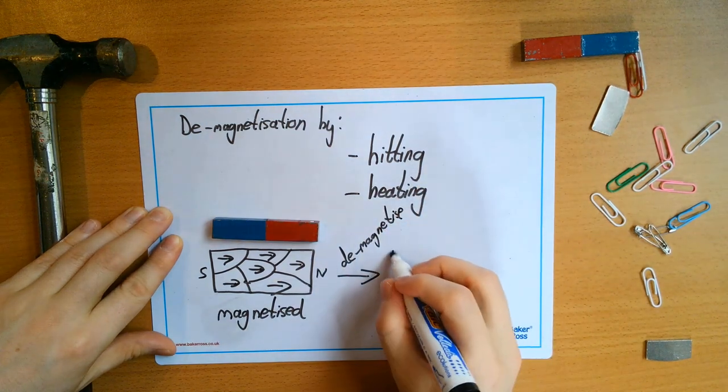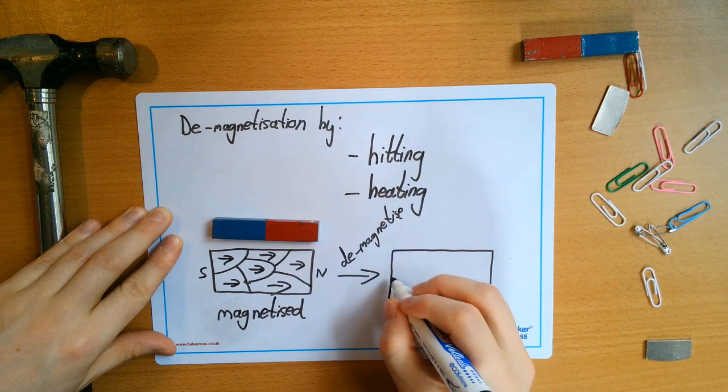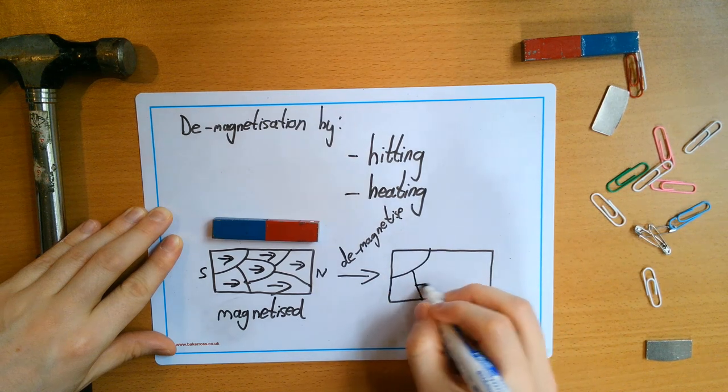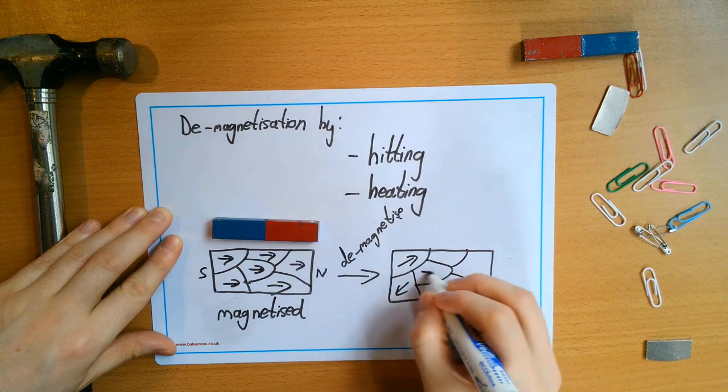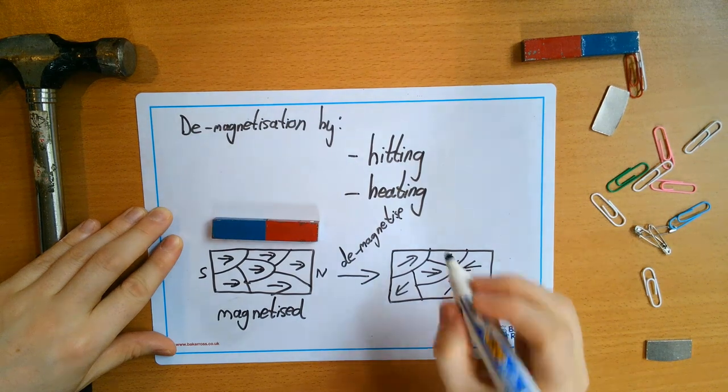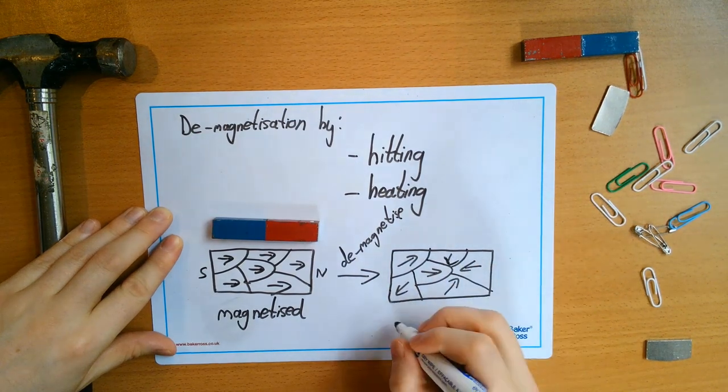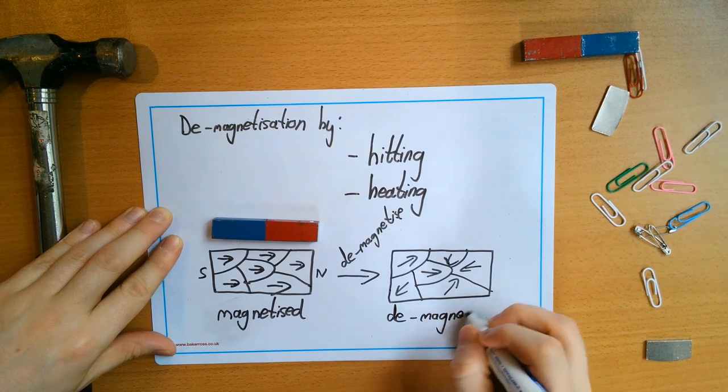will cause the domains to point in random directions like that. So all over the place. And that is demagnetized.